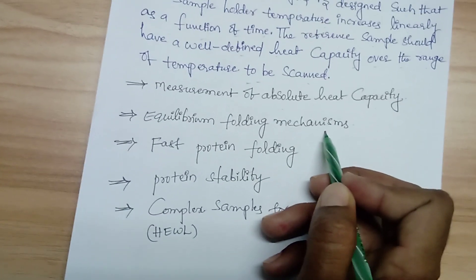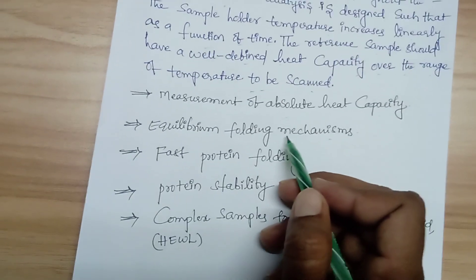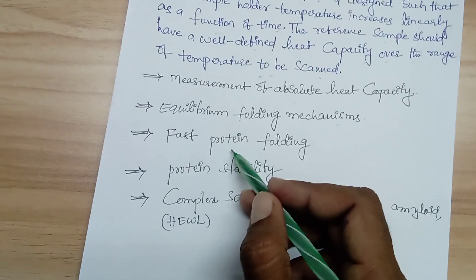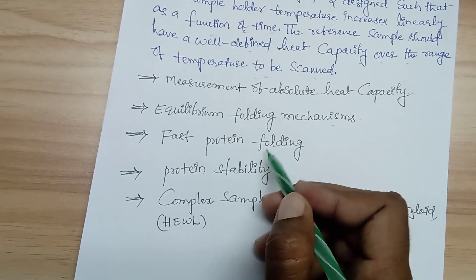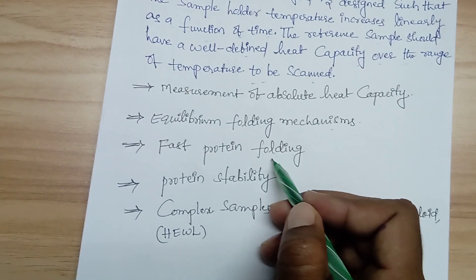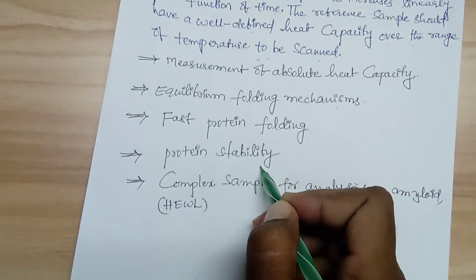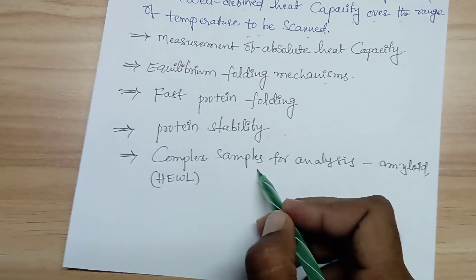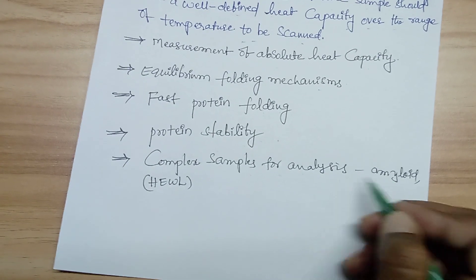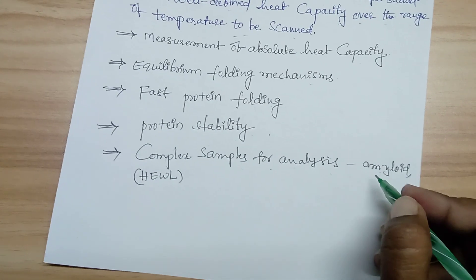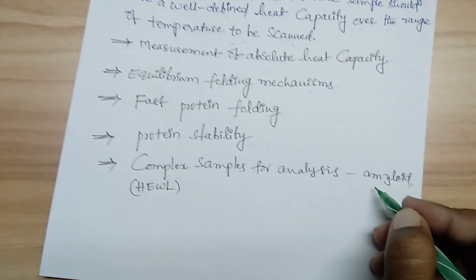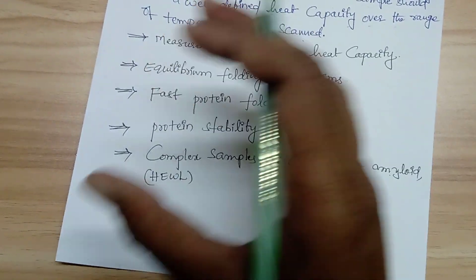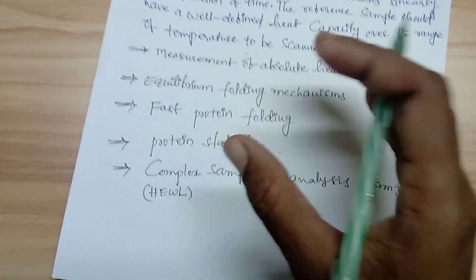Other applications of DSC include studying the equilibrium folding mechanism of proteins, determining fast protein folding rates, assessing protein stability, and analyzing complex samples such as amyloids — fiber-forming proteins like lysozyme and myoglobin that form fiber structures. These complex samples can all be studied by DSC.